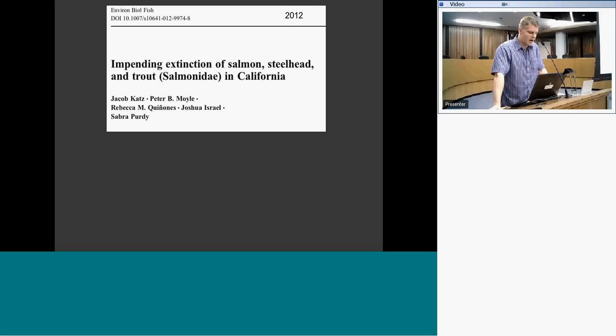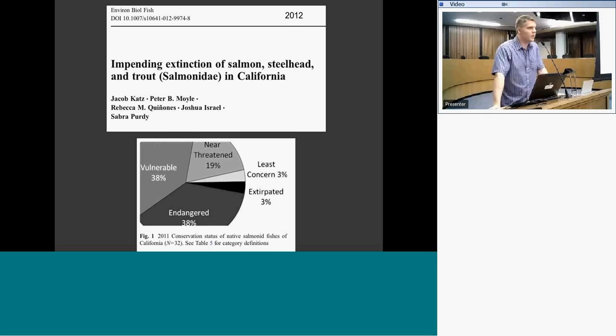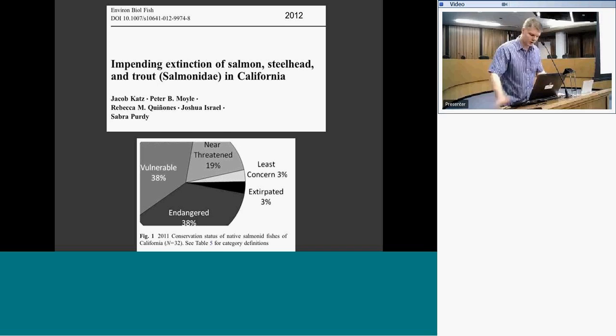When focused on anadromous species and other salmonids, the situation is actually even more dire. About 90% of the salmonids native to California are near-threatened, vulnerable, endangered, or have already been lost from our watersheds, with only 3% in relatively secure shape.